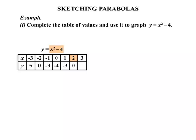And we continue putting the 2 in. We get 2² - 4, which is 0. And then putting the 3 in, we get 3² - 4, and that is 5. So our first step is complete. We've completed the table.